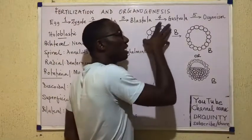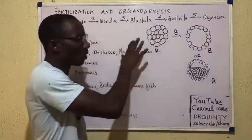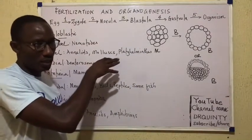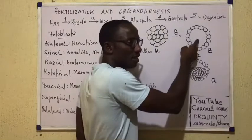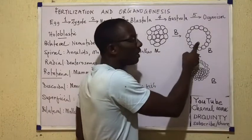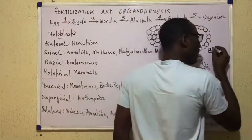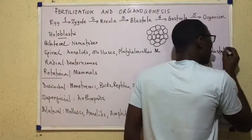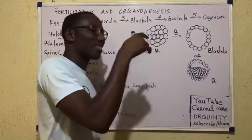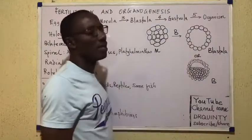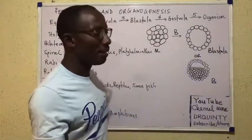A morula is a compact mass of cells, usually with no space in between. But once there comes to be a hollow — a cavity in the morula — its name changes from morula to blastula. So the blastula is a morula that has acquired a cavity. Once that cavity forms, we say it has become a blastula.